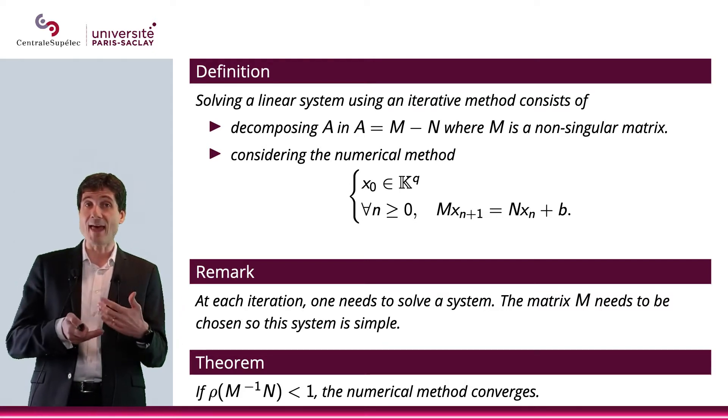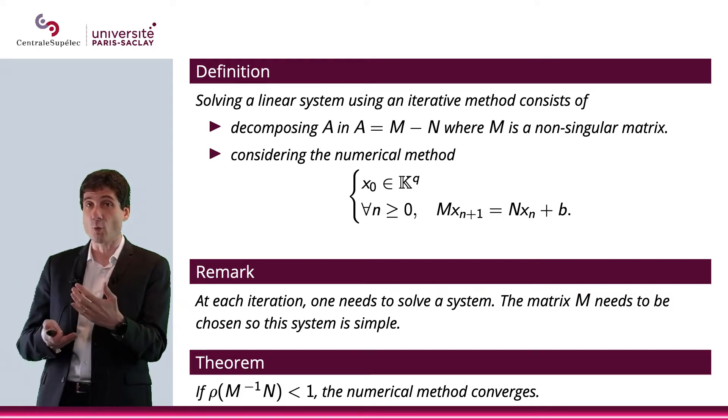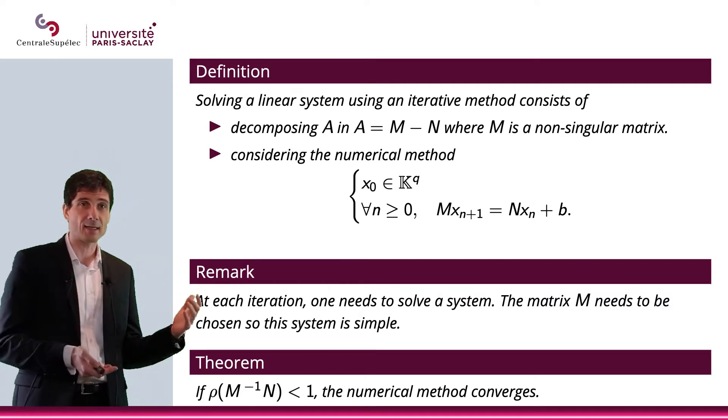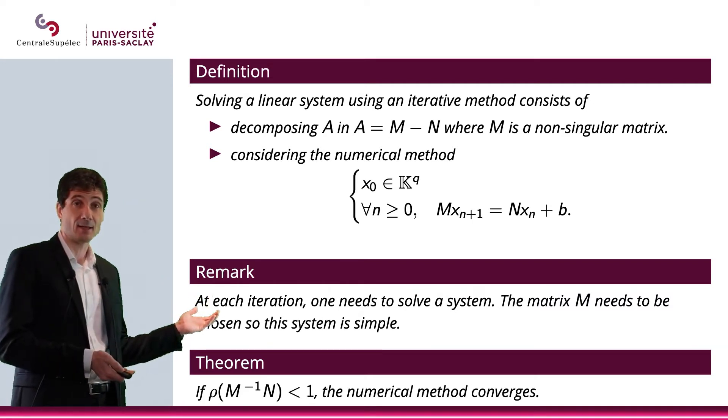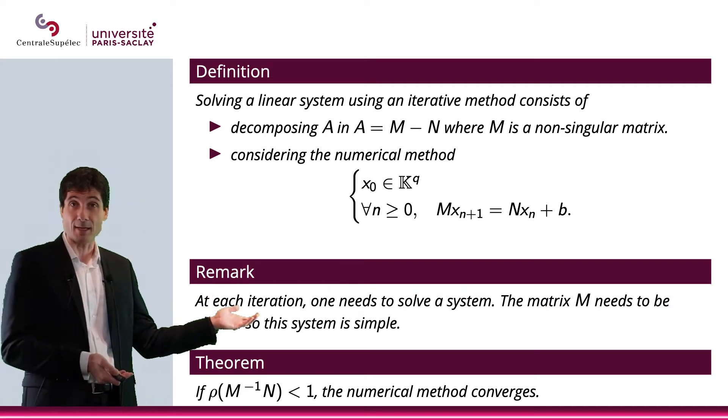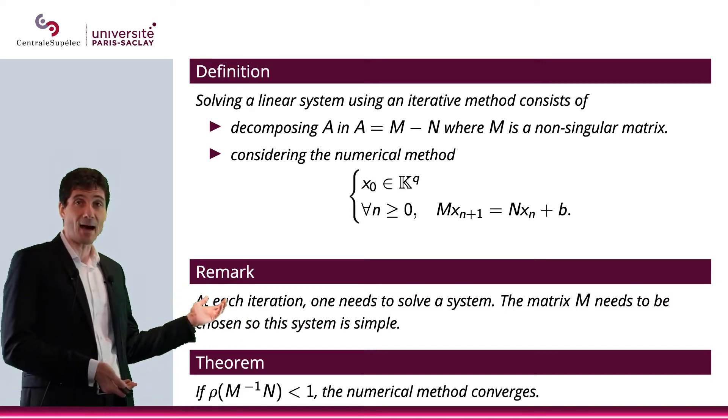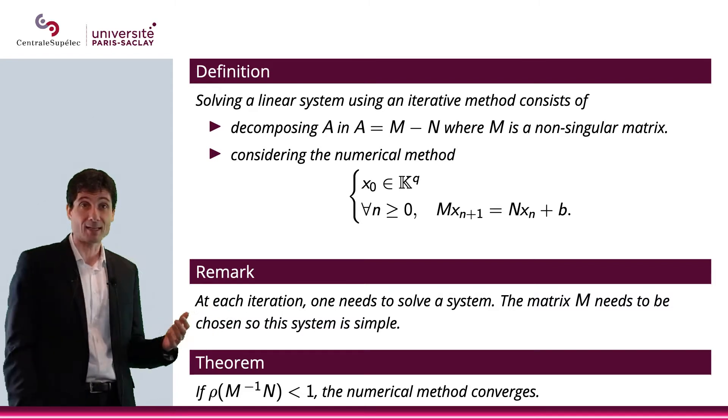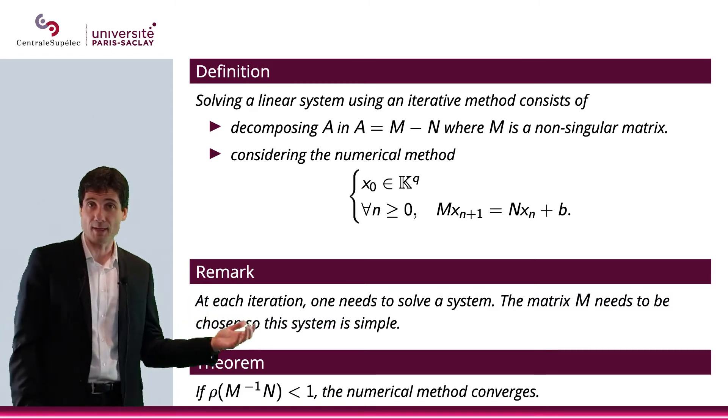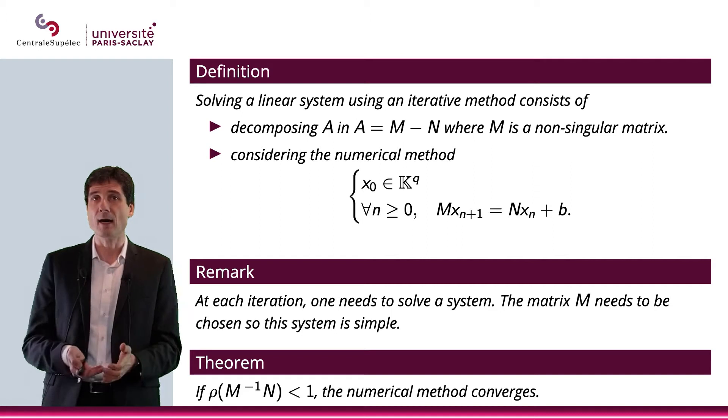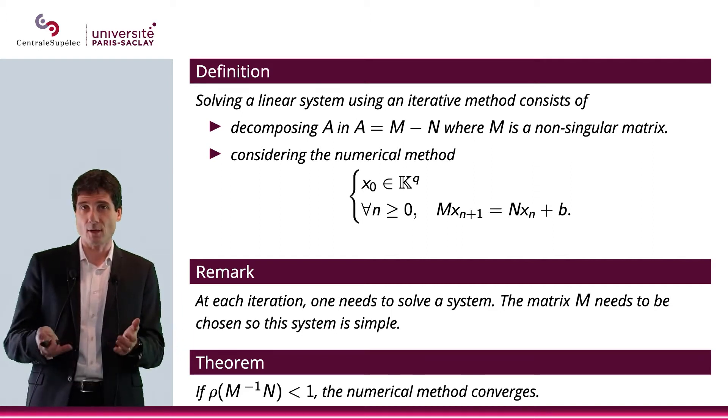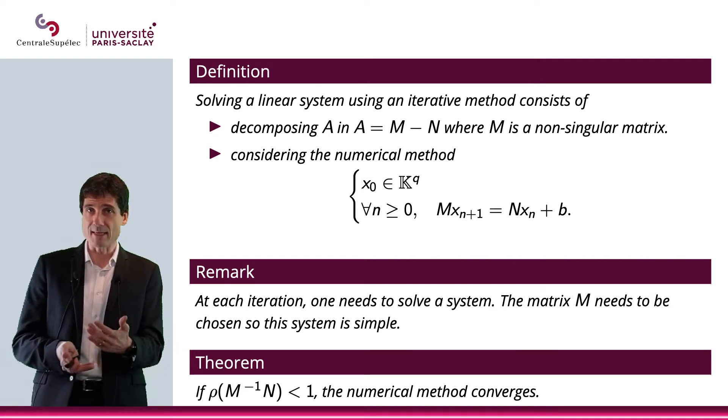Now, obviously, if x_n converges toward x, then you expect Mx to be equal to Nx plus b, which means that you expect Mx minus Nx to be equal to b, which means that you expect Ax to be equal to b. So x should be, indeed, the solution to the system. So this makes sense.